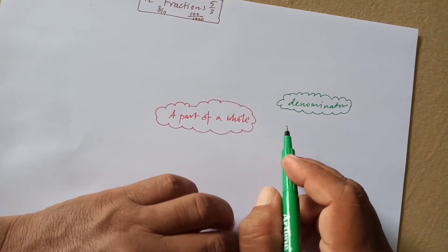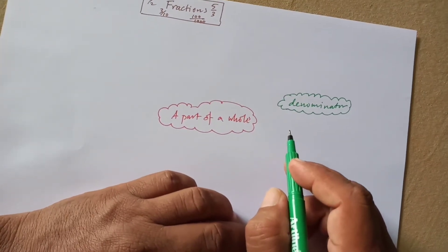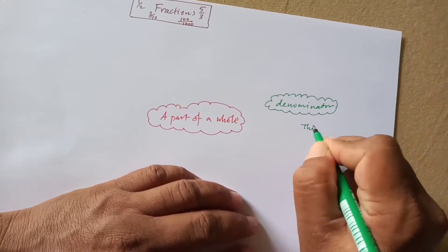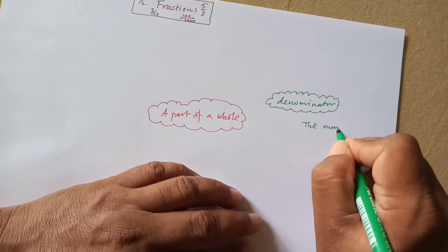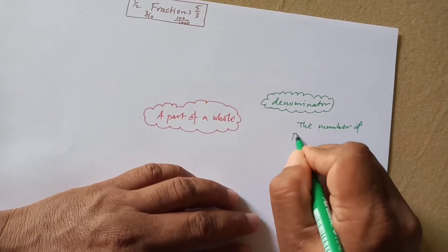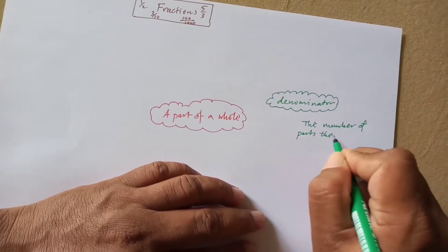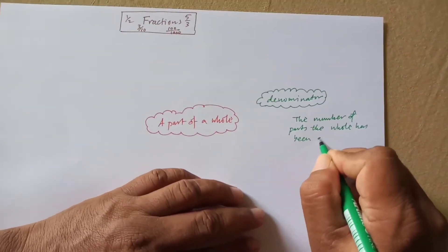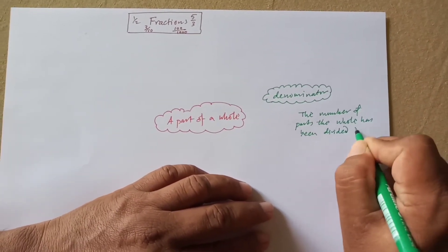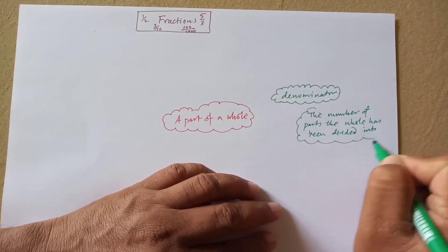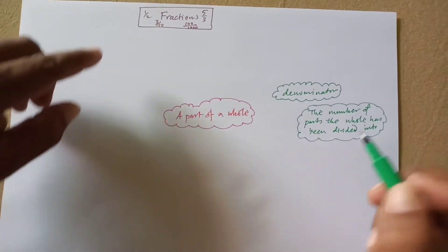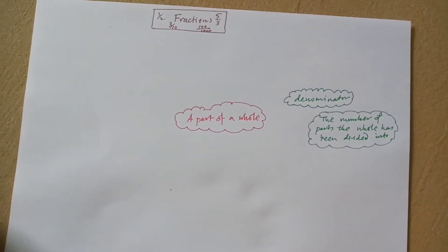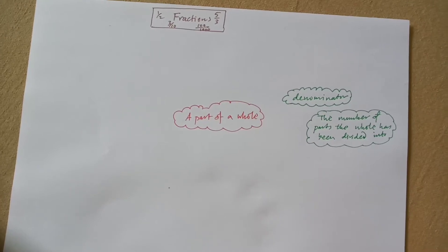So denominator is the number of parts the whole has been divided into. And this part which is on top is called a numerator. So the part that you take out of the whole is called a numerator.